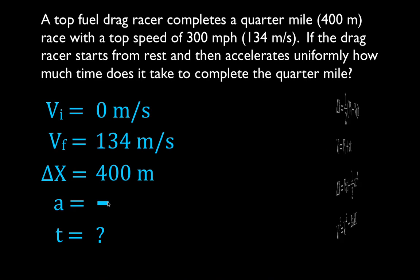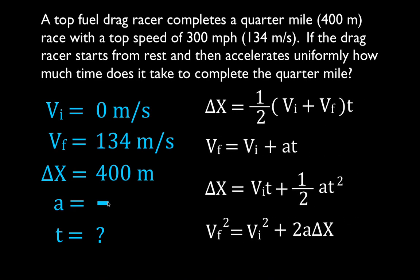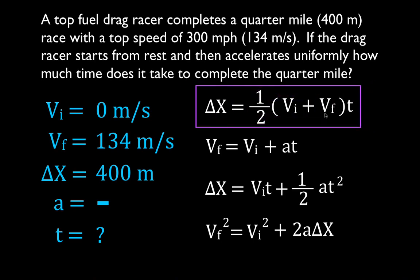We get out our kinematic equations. We're trying to solve for time, so we look for an equation that has time in it and check whether we know the other three variables. For the first equation, we know delta x, initial velocity, and final velocity — all three — so we can use this equation. The second, third, and fourth equations all include acceleration, which we don't know, so we can't use those three.